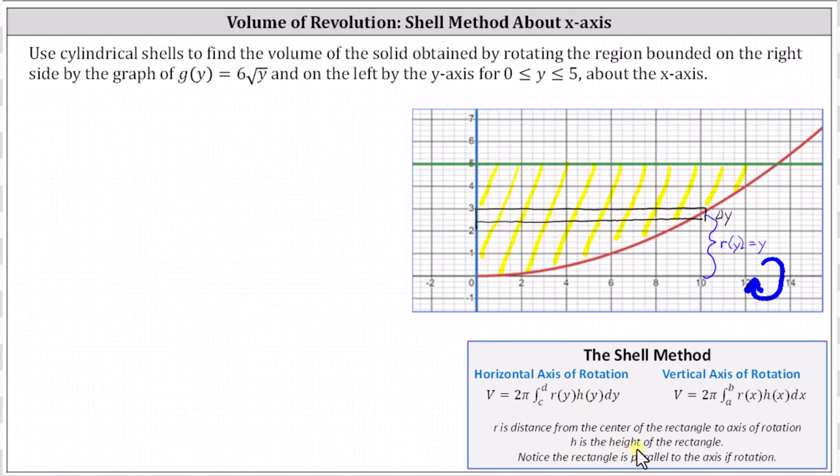And then h is the height of the rectangle, which in our case would be this horizontal distance. The horizontal distance x is determined by the curve given by the equation x = 6√y, which indicates h(y) = 6√y.